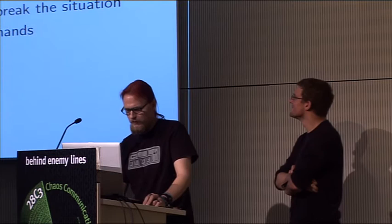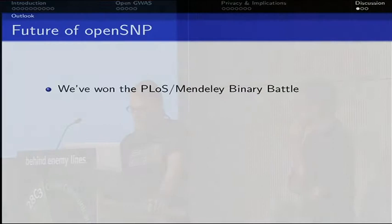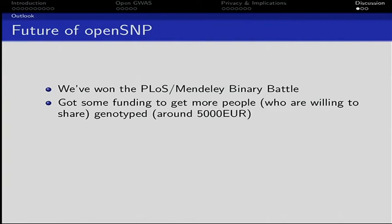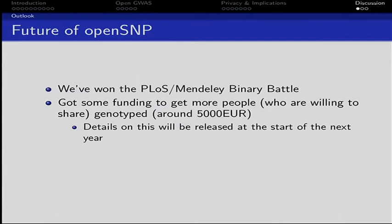We have the chance to take science into our own hands — get it out of the company vaults where 23andMe sits on a large amount of data that the public and other researchers can't use. We've won the PLOS and Mendeley binary battle with OpenSNP, and we've got some funding through the German Wikimedia Foundation — 5,000 euros, enough to get about 25 more people genotyped publicly. Check it out if you want to get genotyped and don't have the money.